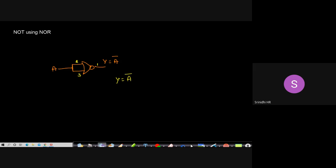In today's session we discussed basic gates: AND, OR, and NOT. Then we covered derived gates: NAND, NOR, and XOR. We also studied realization of basic gates using derived gates — constructing AND, OR, and NOT using both NAND and NOR gates.